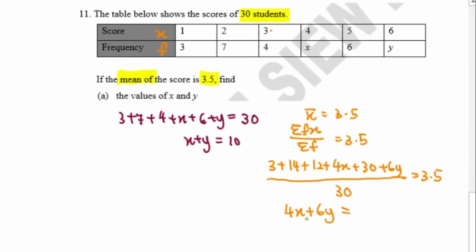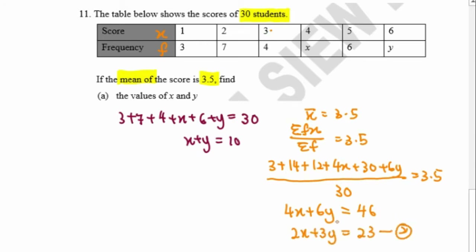Simplifying, we get 4x plus 6y equals 46, and dividing by 2 gives us 2x plus 3y equals 23 — this is equation number 2. From equation number 1, I multiply by 2 so that I can eliminate x.